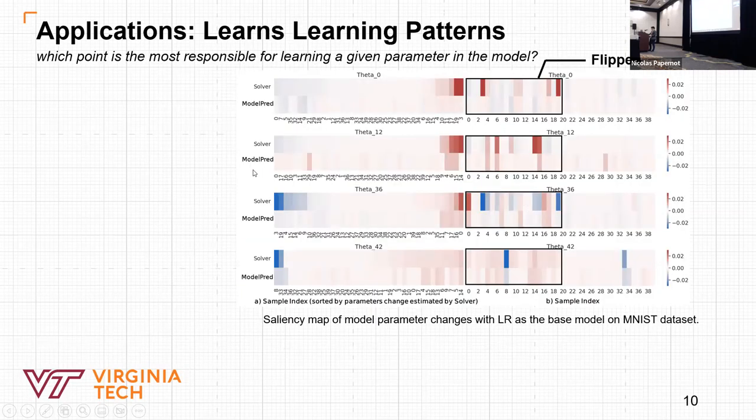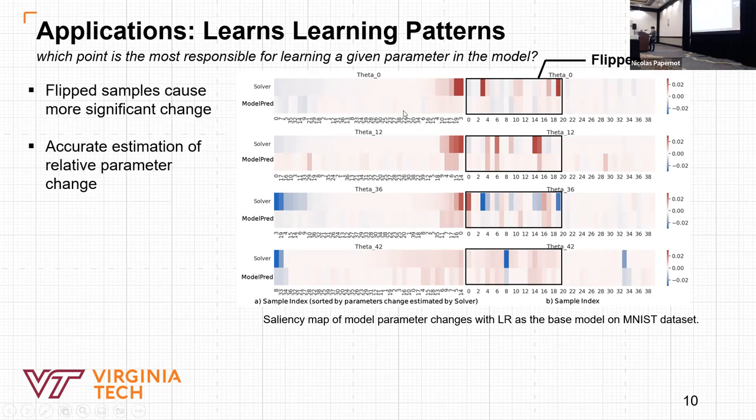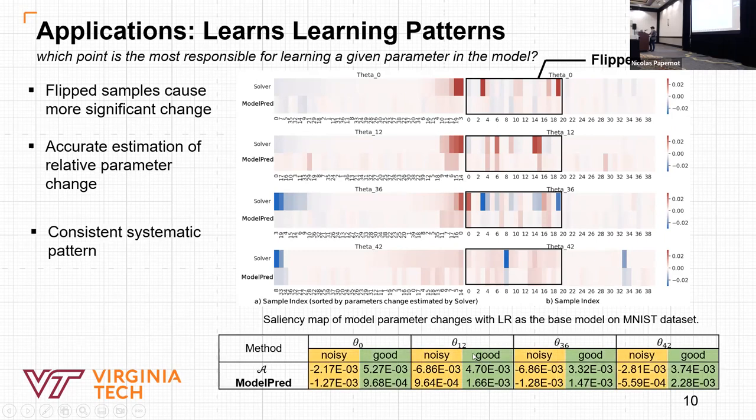For the question of which point is most responsible for learning a given parameter in the model, we answer this by showing Model Parade can learn the learning patterns. We flip several samples in the subset after the training process and plot the saliency map of model parameter changes when a specific data point is excluded from the training set. From the map, we can see that Model Parade can accurately predict the relative parameter change caused by removing individual data points. We can also find that the average value of the parameters predicted by Model Parade is consistent with the ground truth. This demonstrates that Model Parade can generalize on flipped or noisy samples after training.